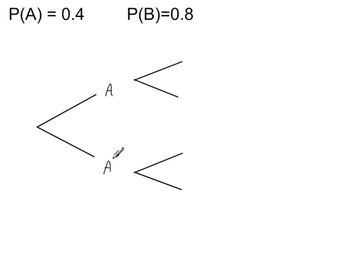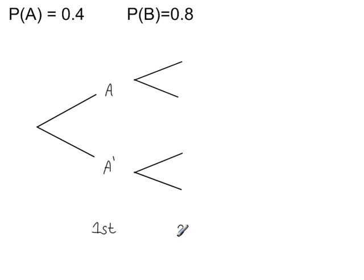A' represents the event A not happening. So this is the first event — either A happens or A does not happen, A'. And then we have the second event, so either B happens or B does not happen.